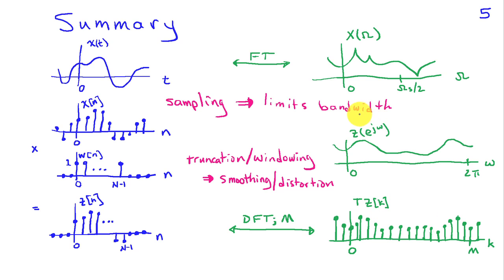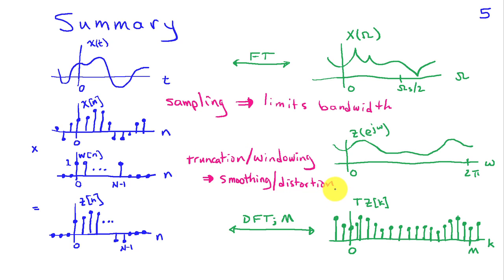The first step — sampling in time — is well characterized and we understand its impact. The last step — sampling in frequency — is also something we've studied well. The step that remains to be looked at more carefully is the windowing and truncation step.